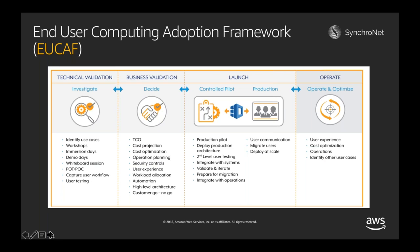We're easy to work with as well. We like to say that we wrote the book on end-user compute on AWS. We're happy to send you the UCAF white paper that we wrote with AWS. And better yet, anyone attending today's webinar is eligible to receive a two-hour deep dive with one of our cloud architects to discuss your specific objectives for cloud computing in your environment. All we ask is that you fill out the survey that we send as a follow-up.